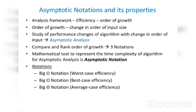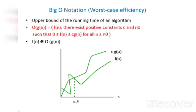Big O notation represents the worst case efficiency and the upper bound of the running time of an algorithm. The formula of Big O notation is given as: Big O of g(n) = f(n) — there exist positive constants c and n₀ such that 0 ≤ f(n) ≤ c·g(n) for all n greater than or equal to n₀. So f(n) belongs to Big O of g(n).